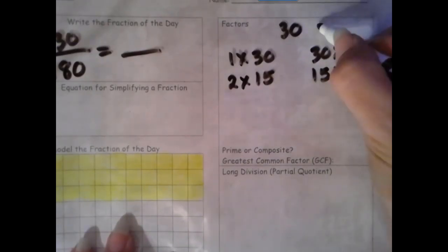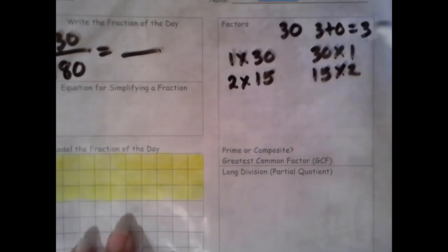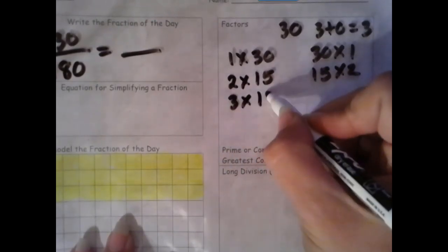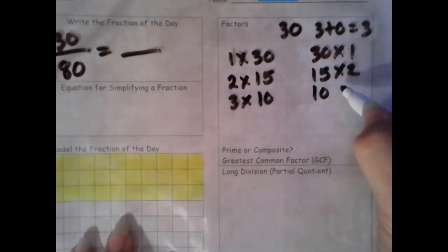Then we try 3. The rule for 3 is that we add the digits together. 3 plus 0 is 3. 3 is a multiple of 3, so 3 is a factor. 3 times 10, 10 times 3.